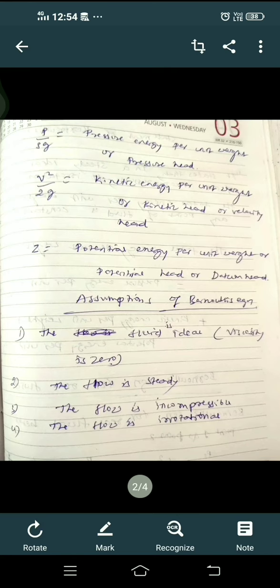v²/(2g) means kinetic energy per unit weight, or kinetic head, or velocity head. z means potential energy per unit weight, or potential head, or datum head.